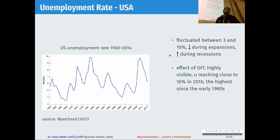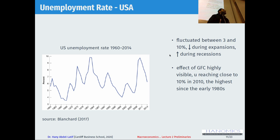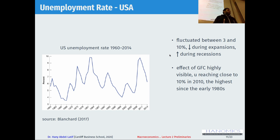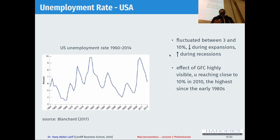The unemployment rate in the US from 1960 to 2014 has been fluctuating from around 3% up to 10%. Unemployment increases during recession — the highest unemployment rate was during the global financial crisis, hitting about 10%. In good times, in booms when the economy is in good shape, you would expect the unemployment rate to be low.